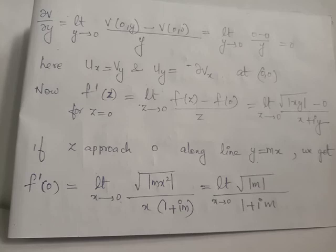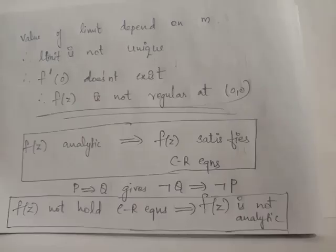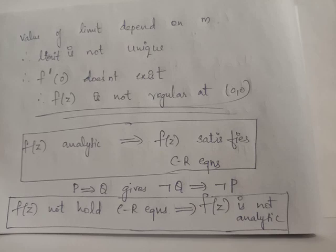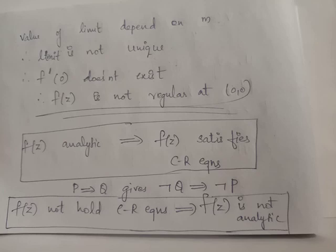Choosing y = 3x gives f'(0) = √3 / (1 + 3i). Since the limit varies along different paths, the limit is not unique and hence does not exist. Therefore f(z) is not analytic at (0,0). Note that whenever f(z) is analytic it is certain that CR equations are satisfied, but by contrapositive logic, if CR equations are satisfied we cannot always conclude that f(z) is analytic.